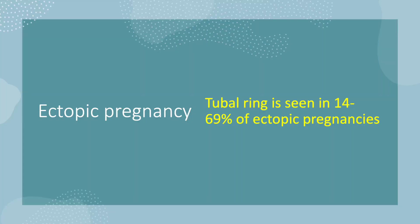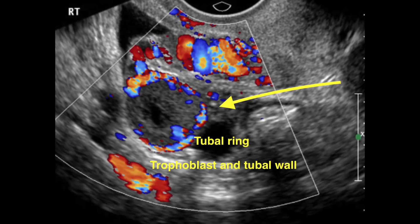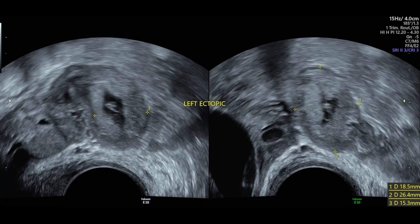The tubal ring is seen in 14-69% of all ectopic pregnancies, as shown in this picture, with a rich vascular supply in the periphery of the gestational sac.